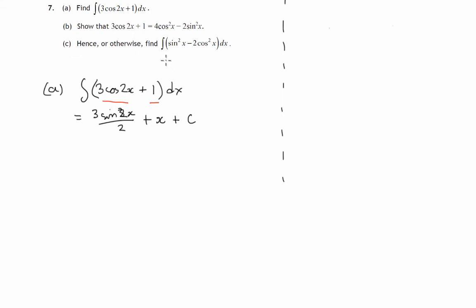So in this part we're asked to find the integral, the integral of sin²x minus 2cos²x, and the word hence implies that we could use what we've used before to prove this.